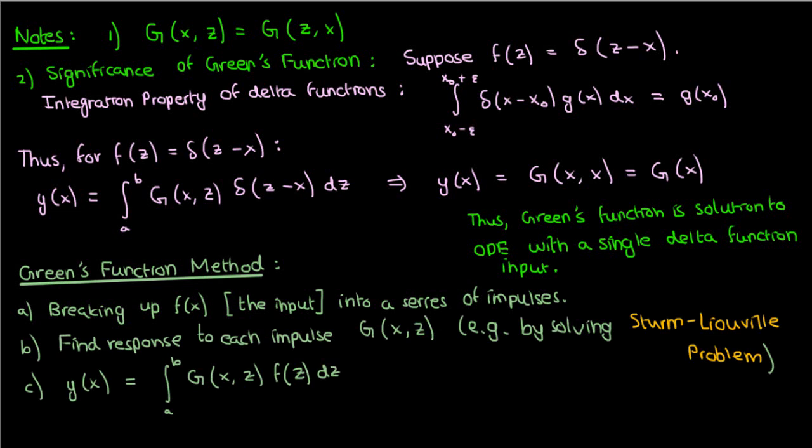And this is the significance of using Green's functions. They're solutions to the ODE for single impulse inputs. And if you add or integrate enough of them together, you can, in theory, find the solution to the ODE for any input.